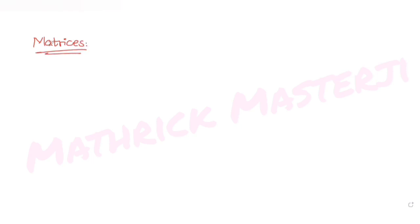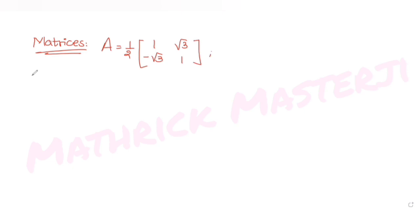Hey guys, I hope you are all doing well. Today's question is from the topic of matrices. The question tells us: if A equals one-half times the matrix with entries 1, √3, -√3, and 1, then which one of the answer choices is correct?